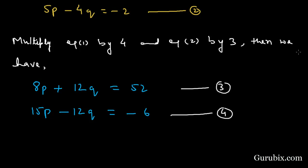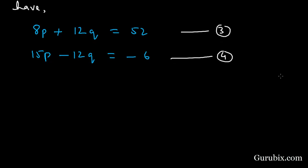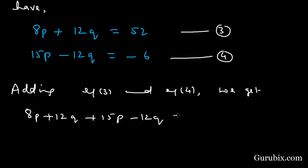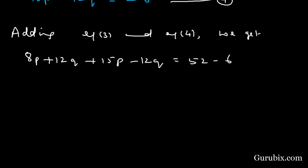Adding equations 3 and 4, we get 8p plus 12q plus 15p minus 12q equals 52 minus 6. This means